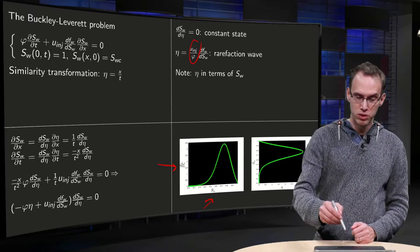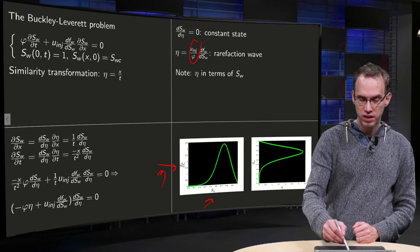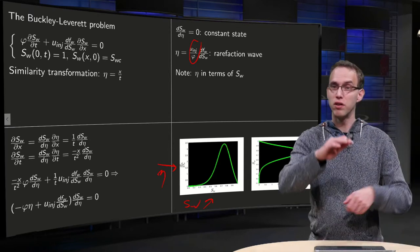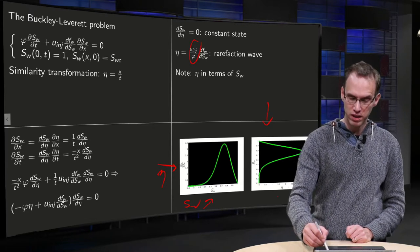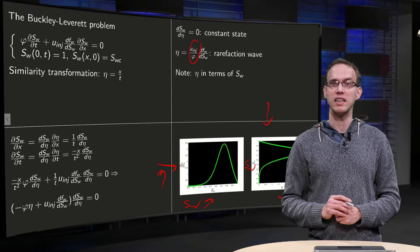So what do we need to do? Well, this has to be our η and this is our Sw, so we just flip the whole figure. That's what we did over here. So now we have η on the x-axis and Sw on the y-axis.